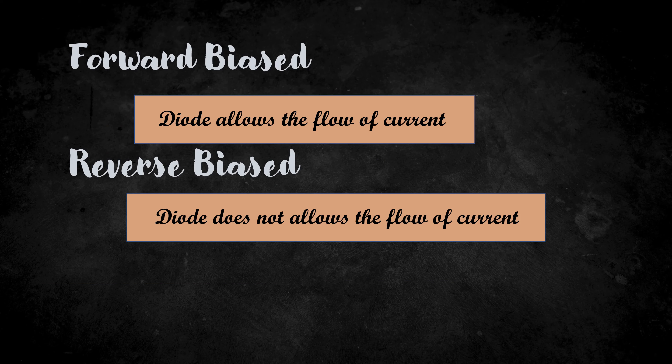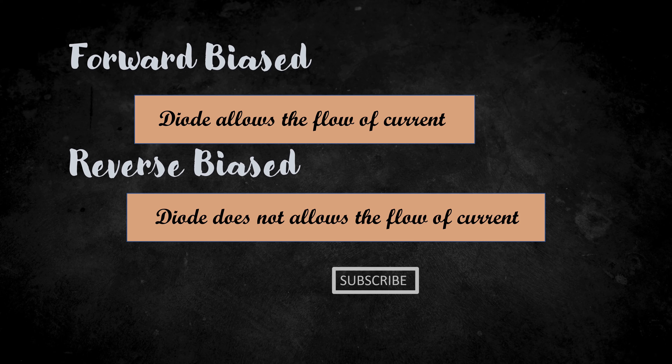So in conclusion, during forward bias the diode allows the flow of current, and during reverse bias the diode does not allow the flow of current. In my next video, we are going to see how these diodes are used in an uncontrolled rectifier. So if you are interested, don't forget to subscribe and click the bell icon so that you will be notified each time I upload a video.